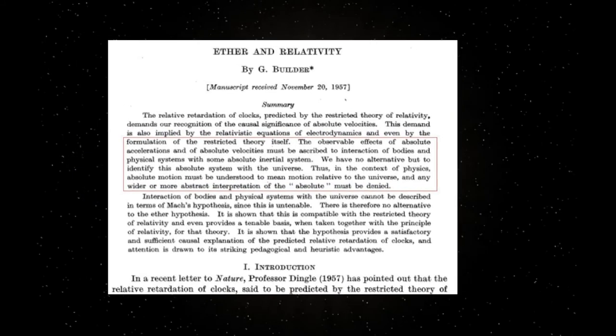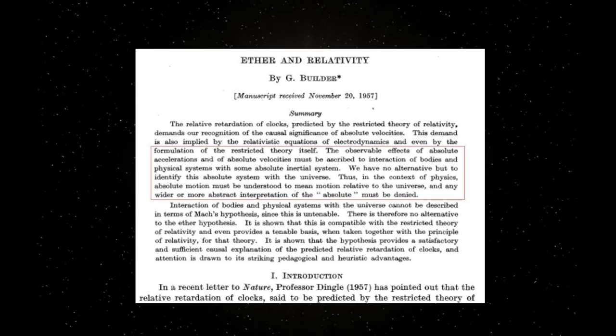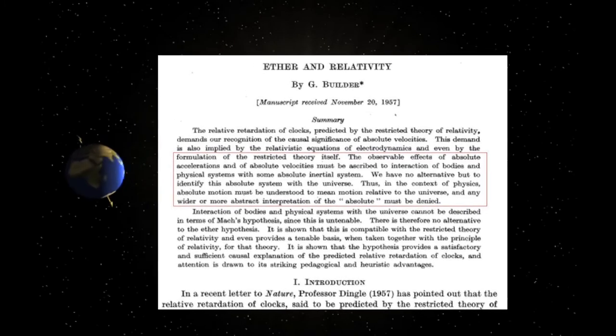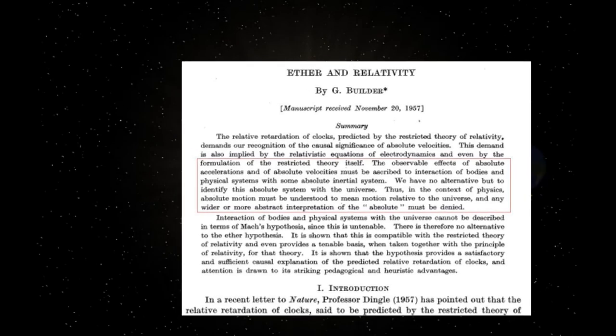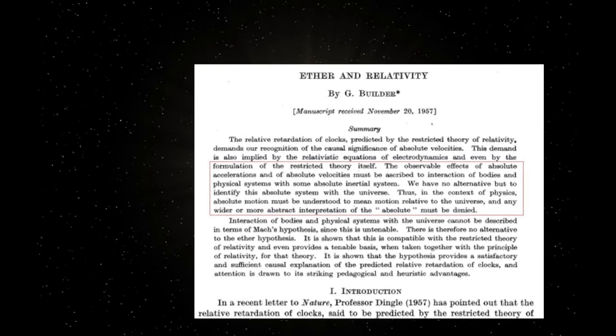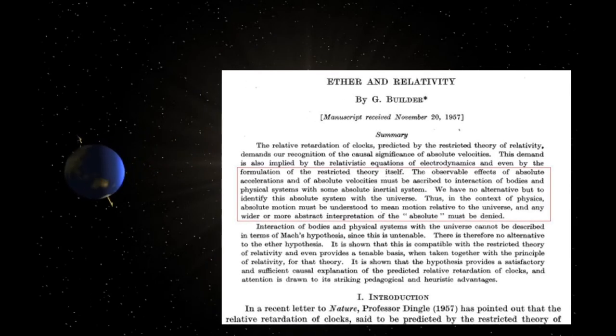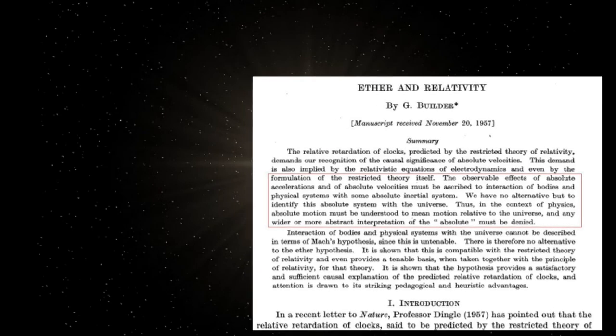Thus in the context of physics, absolute motion must be understood to mean motion relative to the Universe, and any wider or more abstract interpretation of the Absolute must be denied. Interactions of bodies and physical systems with the Universe cannot be described in terms of Mach's hypothesis, since this is untenable. There is therefore no alternative to the aether hypothesis.